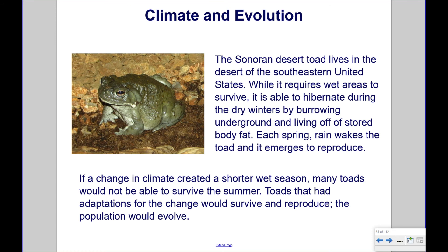The Sonoran Desert Toad lives in the desert of the southeastern United States. While it requires wet areas to survive, it is able to hibernate during the dry winters by burrowing underground and living off stored body fat. Each spring, rain wakes the toad and it emerges to reproduce. If a change in climate created a shorter wet season, many toads would not be able to survive in the summer. Toads that had adaptations for the change would survive and reproduce, and the population would evolve.